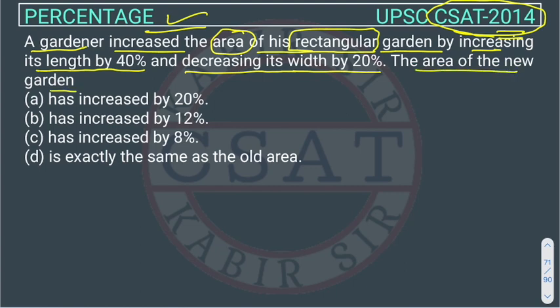The gardener has a rectangular garden. Suppose length is L and breadth is B. So what is the area? We know that area of a garden will be L into B.